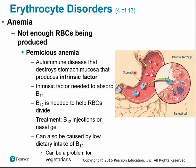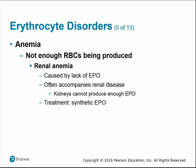Intrinsic factor acts as a carrier — it must bind vitamin B12 to carry it across the intestinal lining for absorption. Renal anemia is caused by a lack of EPO and often accompanies renal disease where the kidneys cannot produce enough EPO on their own; treatment requires a synthetic form of erythropoietin.